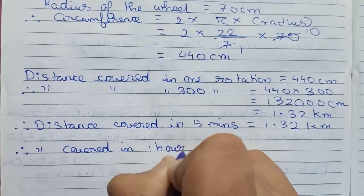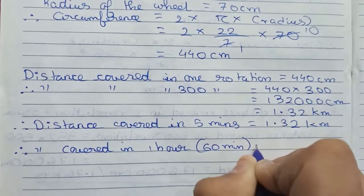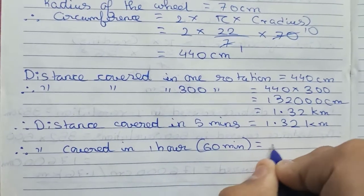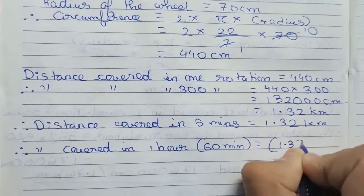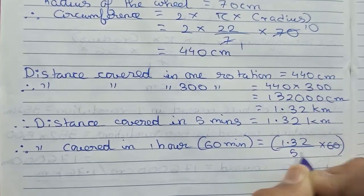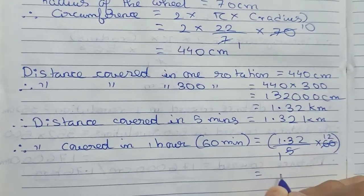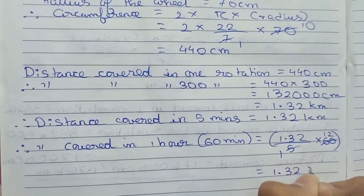To find the distance covered in 1 hour—1 hour you can write as 60 minutes—it will become 1.32 by 5 into 60. First you cut 5 and 60, it will become 12 by 1. It becomes 1.32 into 12.